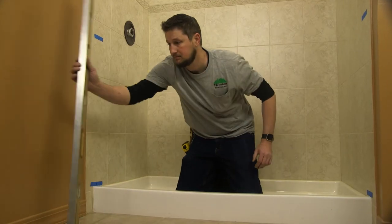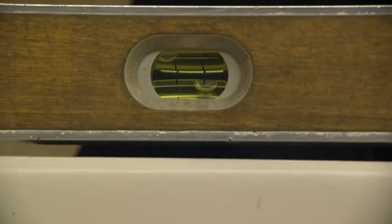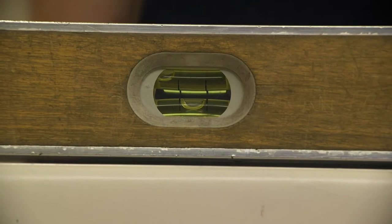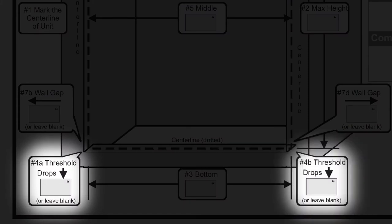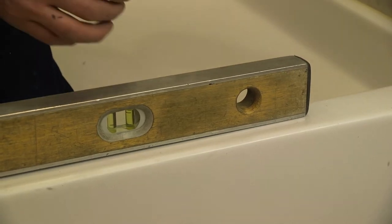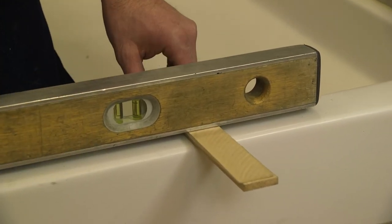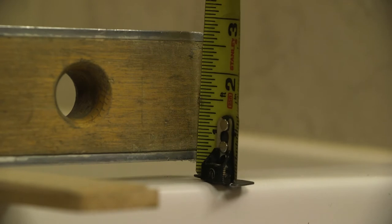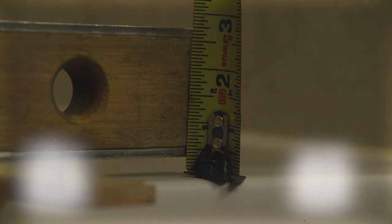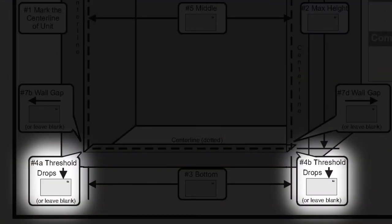Next, determine if the threshold is level. If it is level, leave boxes 4A and 4B empty. If the threshold drops on one side, prop up the level using wood shims or paint stirring sticks until the bubble is centered. Record the measurement on the appropriate side of the sheet in box 4A or 4B where the drop is measured.